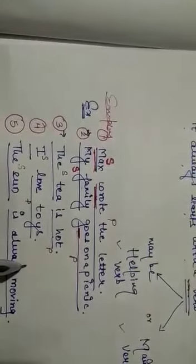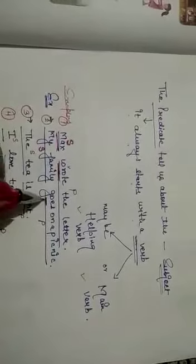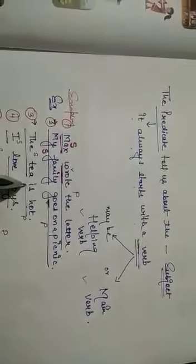The sun is always moving. The sun is subject. And is always moving is predicate. So here it is very clear students that predicate always starts with a verb. Here wrote is a verb. Goes. This is the verb. Is is a verb.